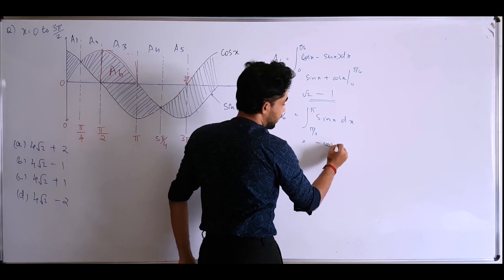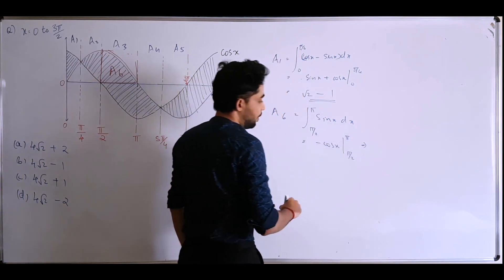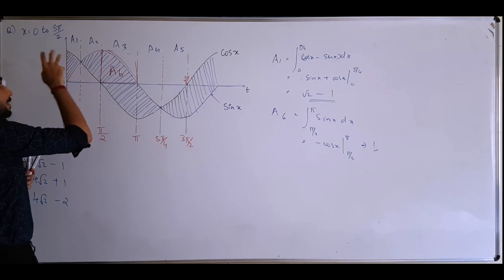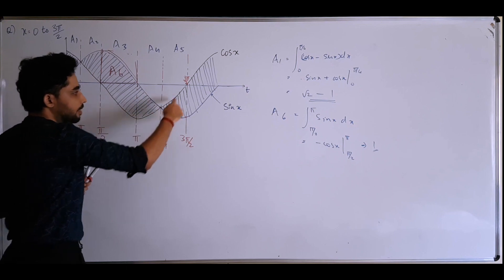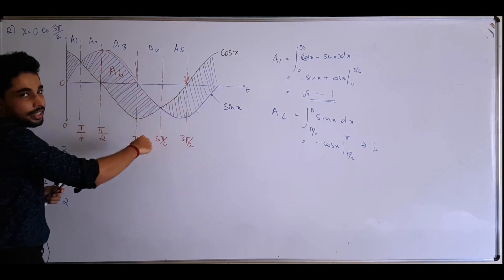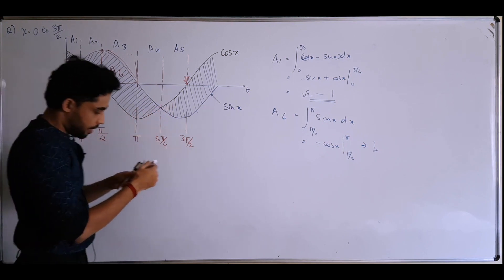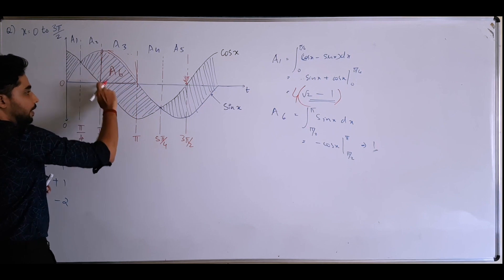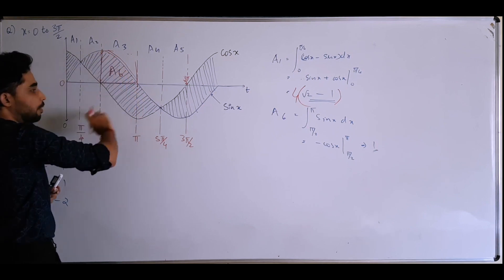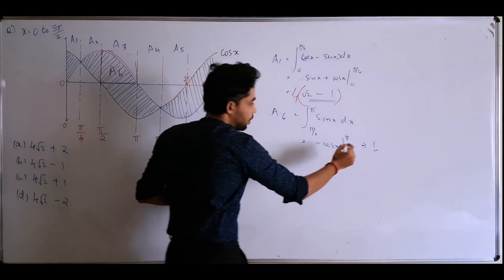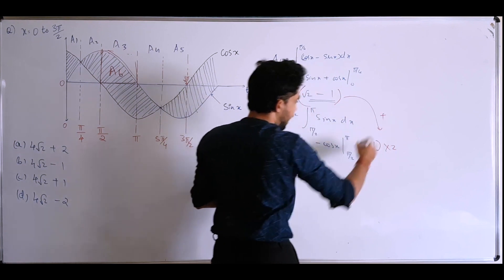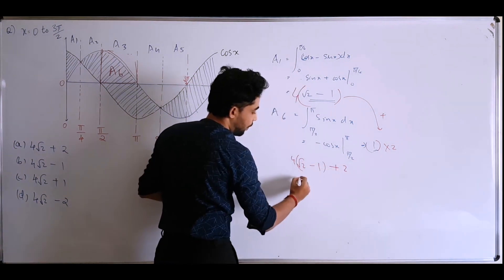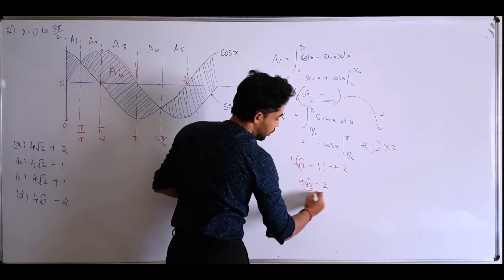Integrating A6: [−cos x] from π/2 to π = 1. Now, by symmetry, this area A6 is exactly the same as A1 and several other regions, so I can multiply A1 by 4. Similarly, the last area A5 mirrors another region, so I multiply that by 2. Adding: 4·(√2 − 1) + 2·(1) = 4√2 − 4 + 2 = 4√2 − 2.